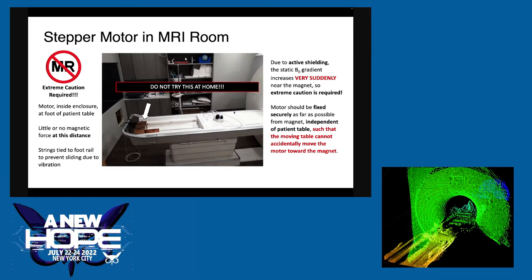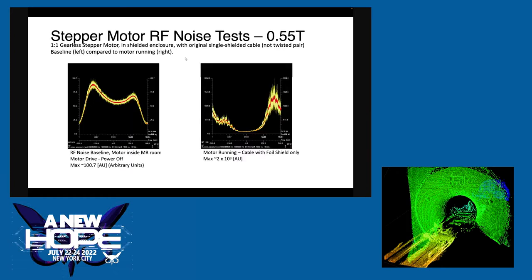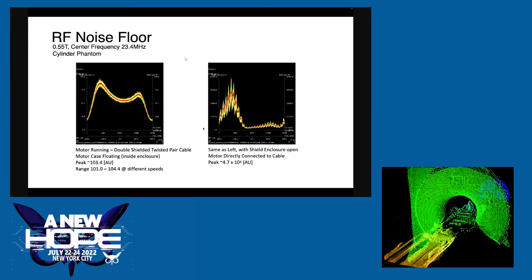We tied strings to the box so it wouldn't slide, because the scanner vibrates while it's on. This is the baseline RF noise, and then this is what happens with the old cable which wasn't shielded very well — it really blows up the noise and we would not get a good picture. Then with the new double-shielded twisted pair cable — the twisted pair really helps — and messing around with the grounding, we got it back down to baseline, which I was really proud of. And just to make sure the shield was working, we opened that sliding door and you could see the difference.